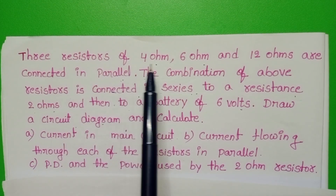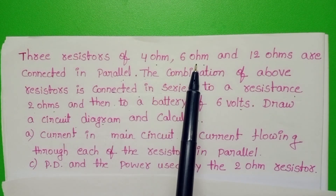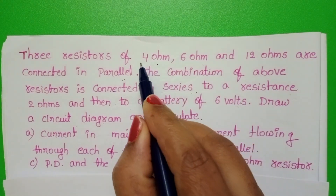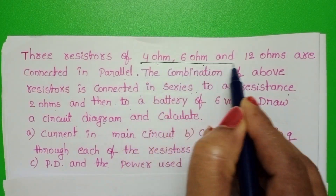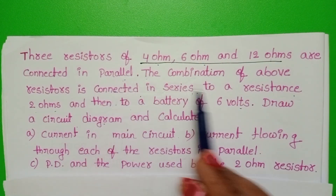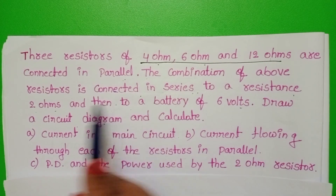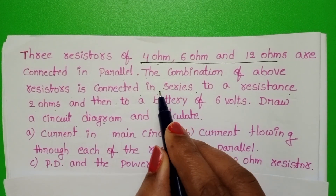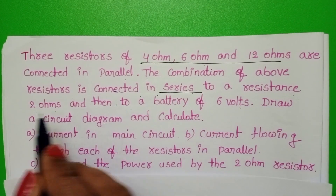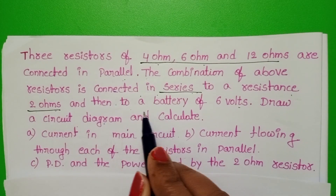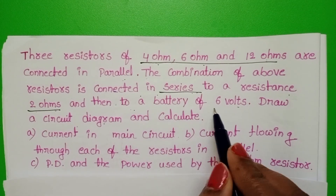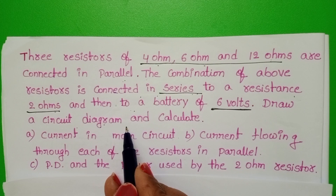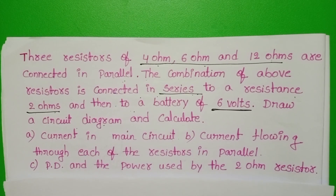3 resistors of 4 ohm, 6 ohm and 12 ohm. These 3 resistors are connected in parallel. The combination of resistors is connected in series to a resistance of 2 ohm, and then to a battery of 6 volt. Draw the circuit diagram and calculate the following.